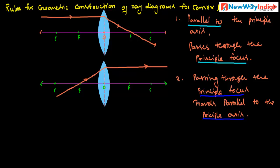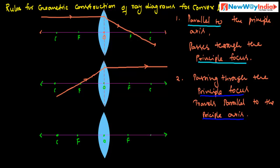The third rule: consider another diagram with optical center O, principal focus F, center of curvature C, and the principal axis. Any ray of light which passes through the optical center will pass through undeviated. If a ray of light passes through the optical center, it continues in the same direction without bending.